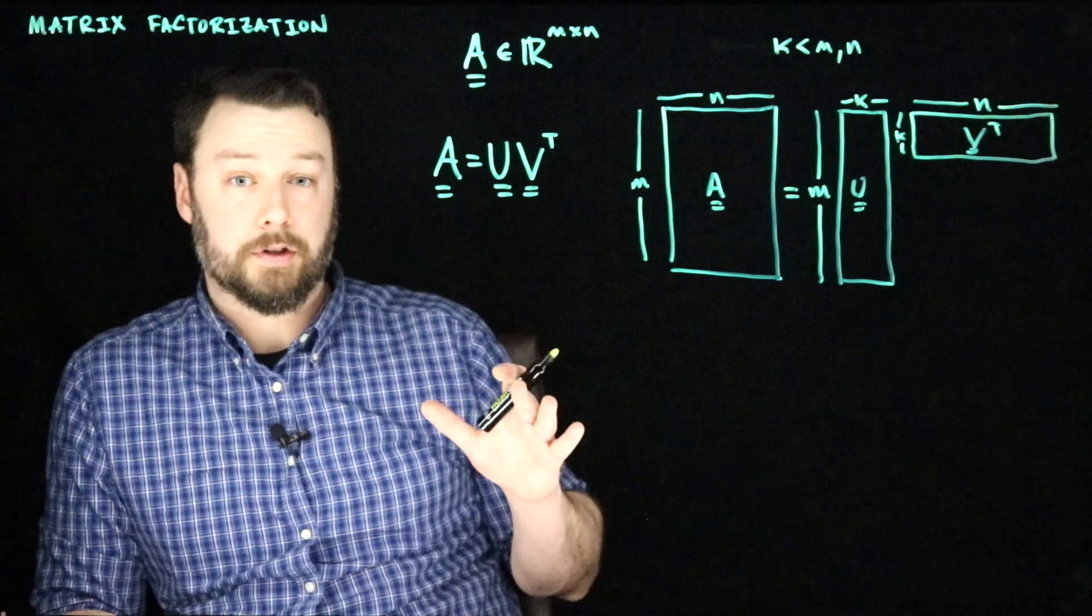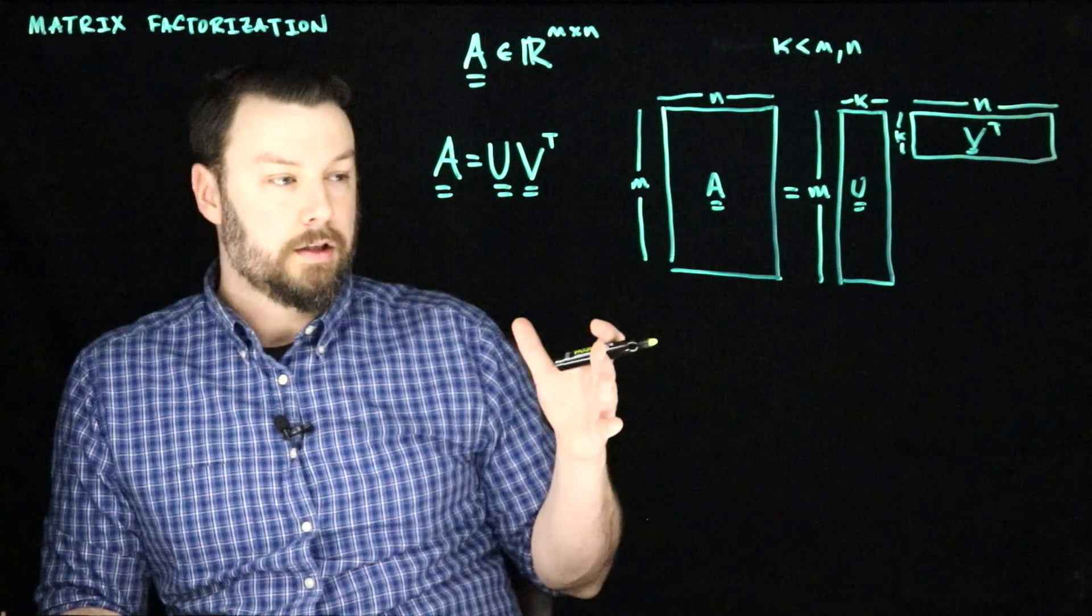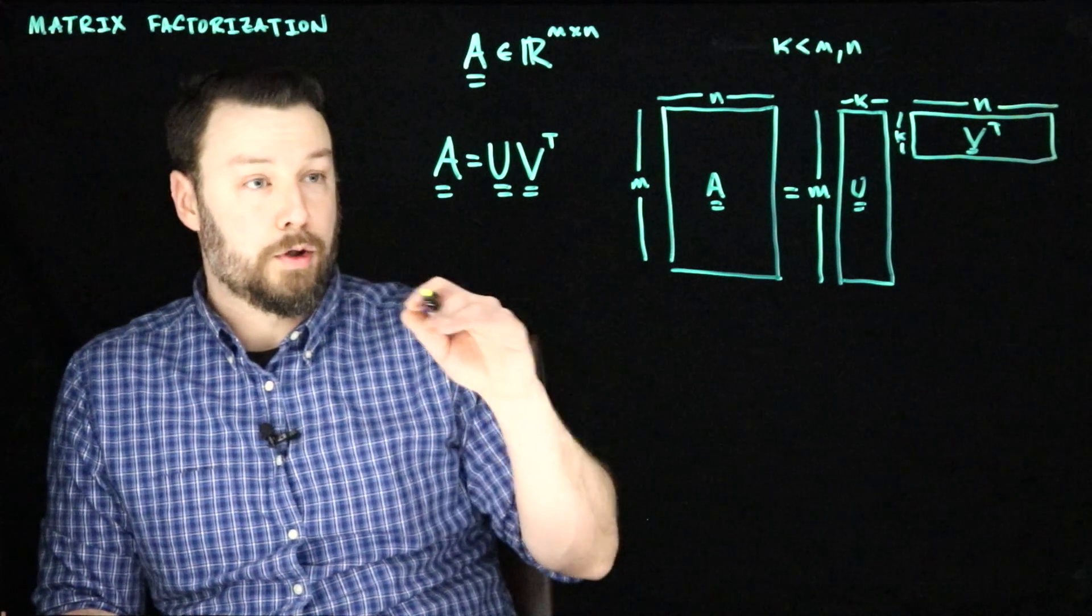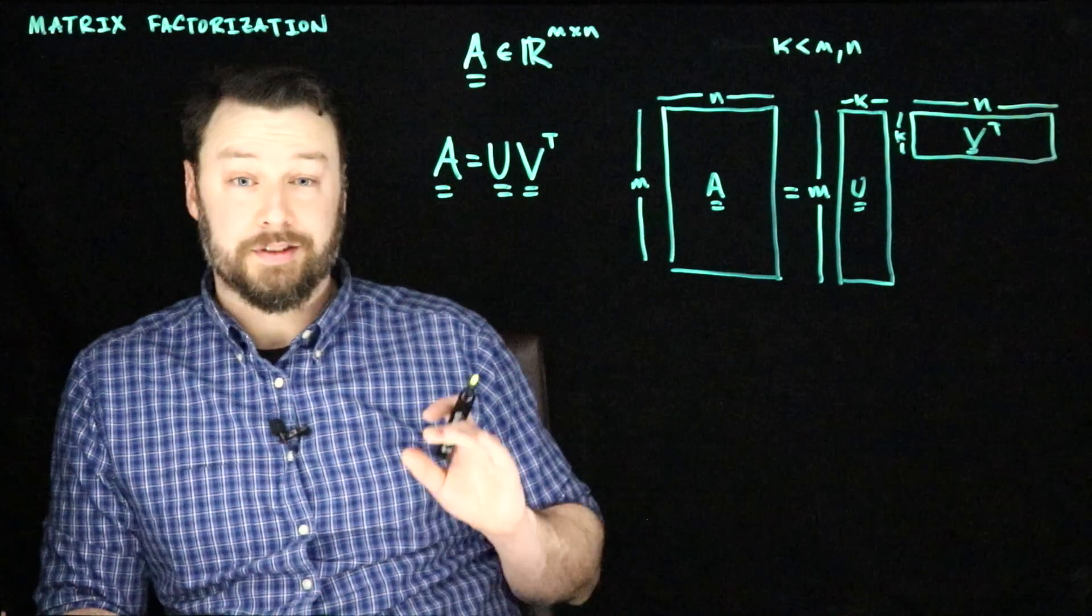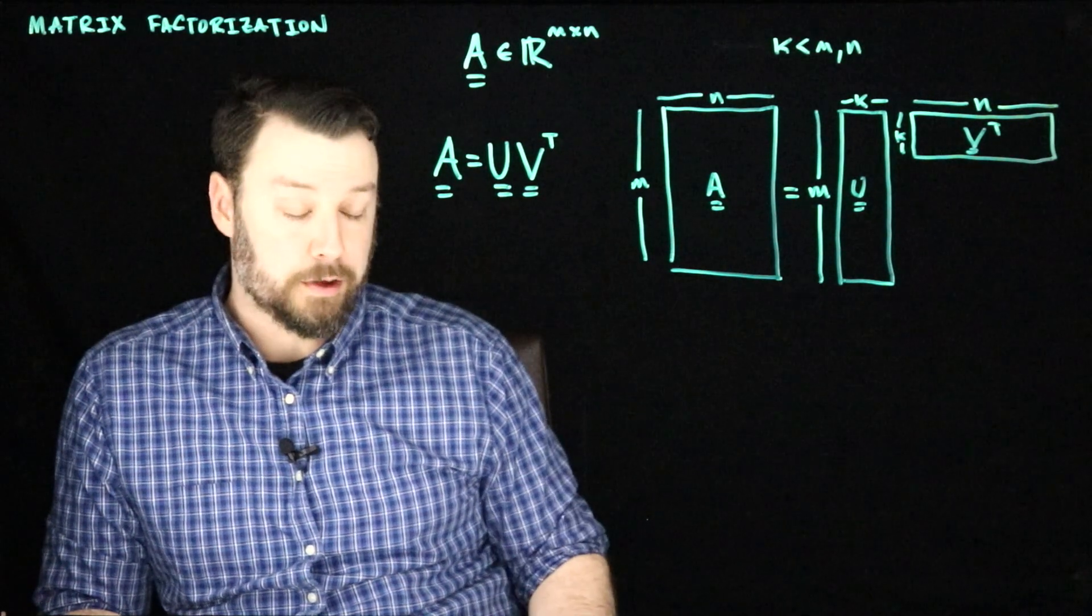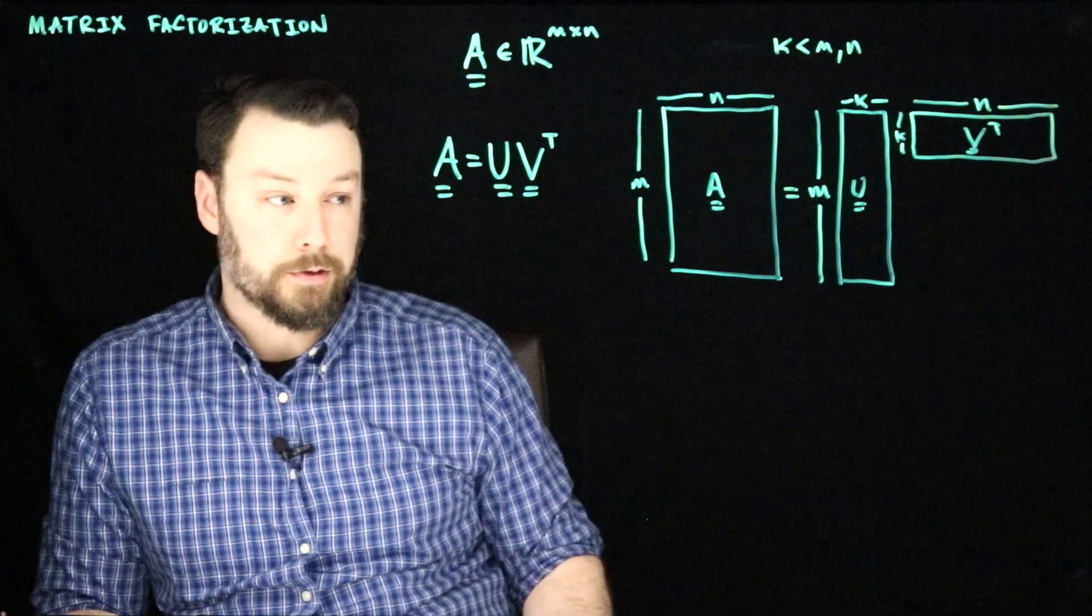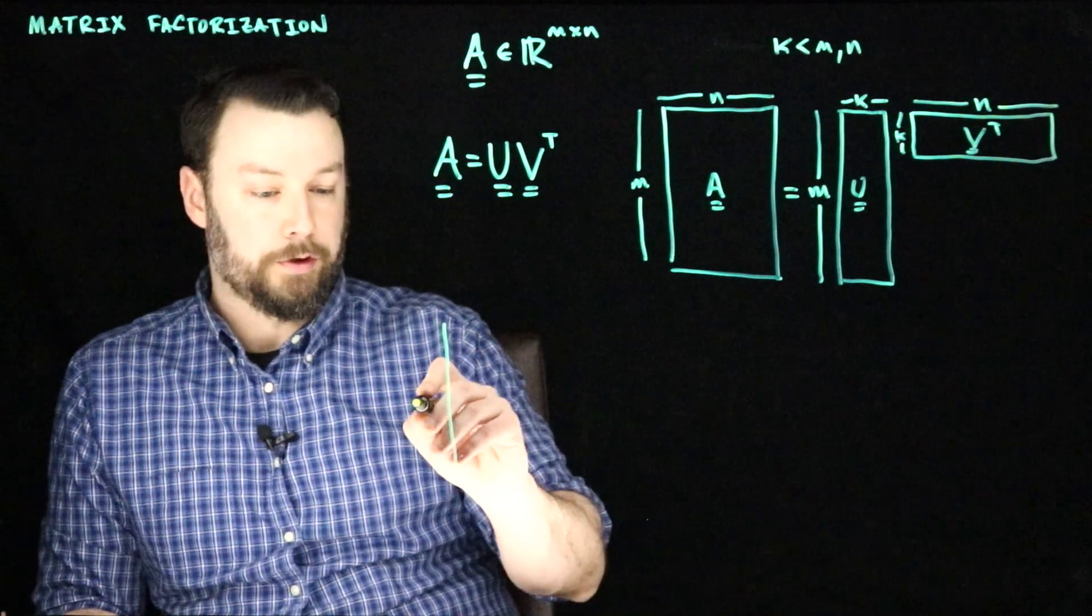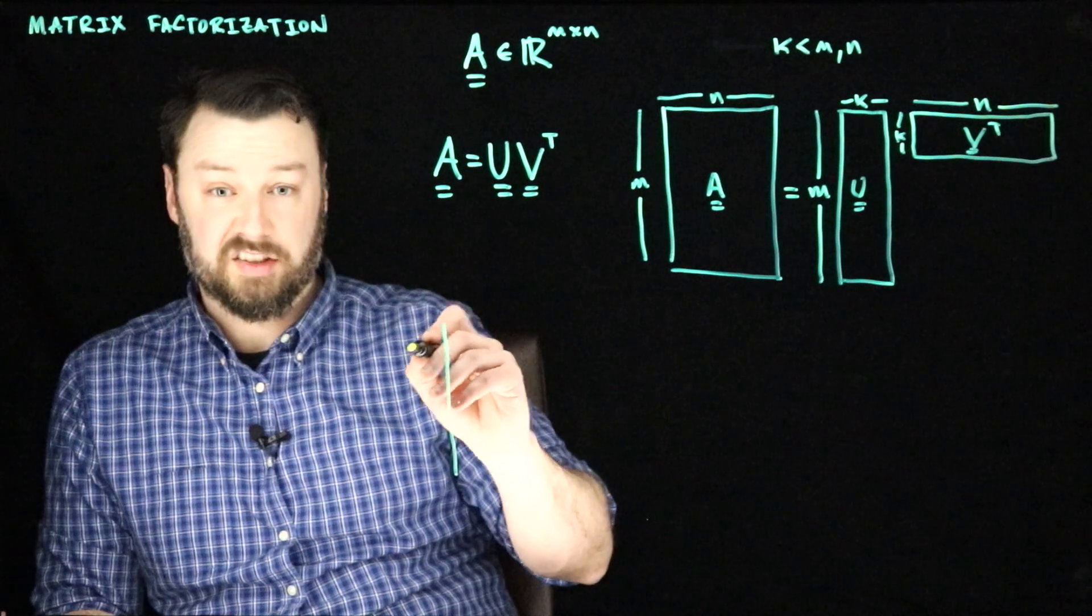Let's take an example that we sometimes call topic modeling. Let's imagine that we have a matrix A and the rows of the matrix A represent different documents in some corpus. So imagine maybe that we have a bunch of scientific articles or we have newspaper articles or something. So we have a matrix where the rows are going to be documents.